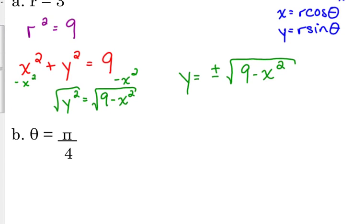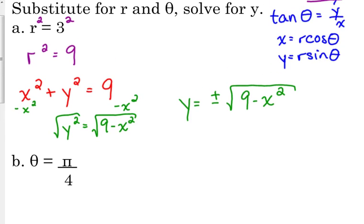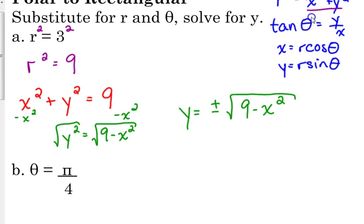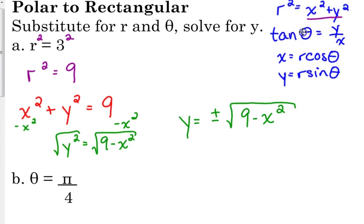Let's look at B. Theta is equal to pi over 4. Sometimes there are a bunch of different ways that we can go with these relationships. The simplest expression that we have involving theta is tangent of theta is equal to y over x.